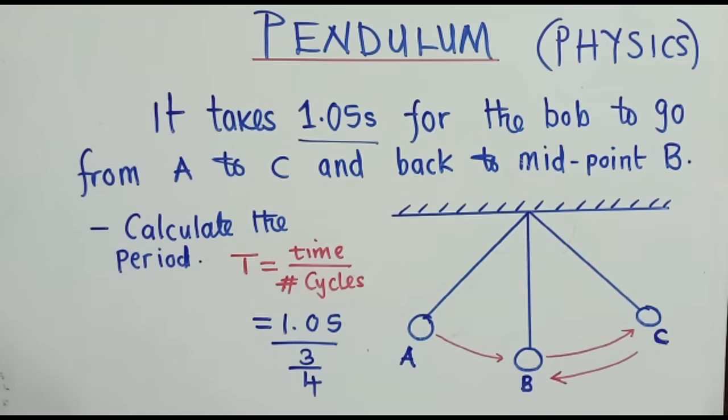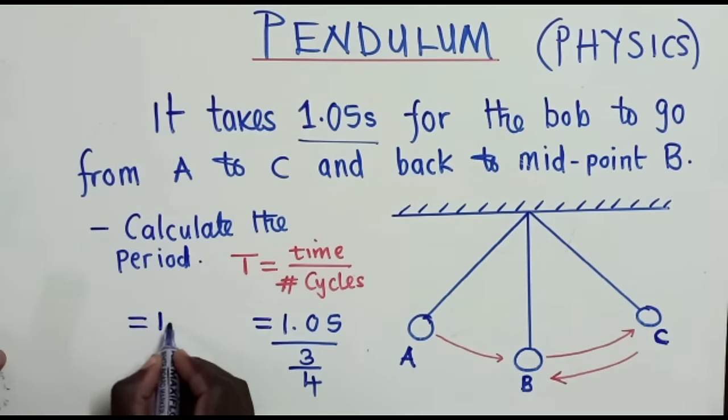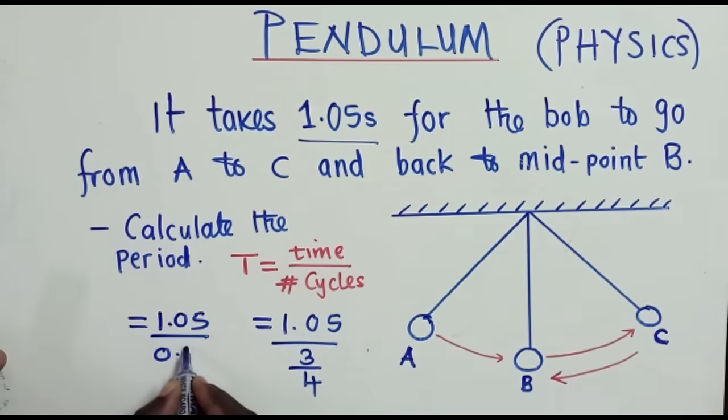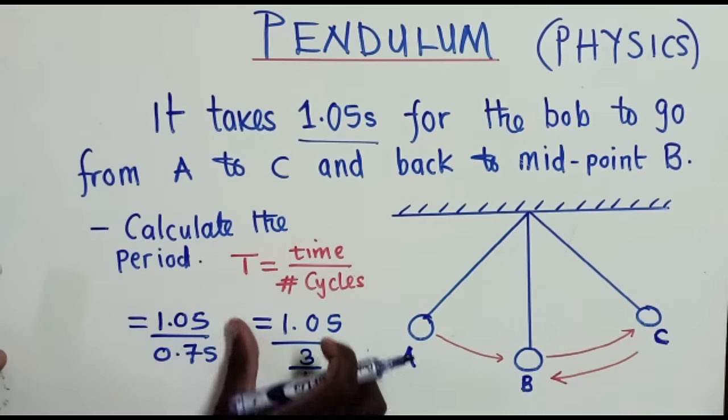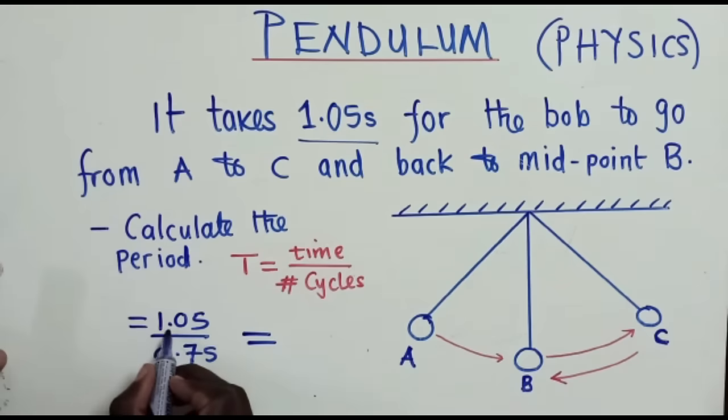So there, we can punch on calculator. What is the value of 3 over 4? It's, of course, 0.75. So from here, we have 1.05 over 0.75. So this and this are just the same.